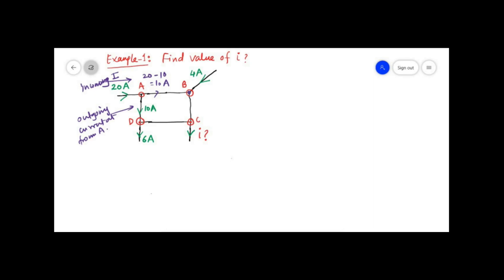At node B, 10 ampere is incoming and 4 ampere is also incoming current. We assume incoming current as positive. So at node B: 10 ampere plus 4 ampere incoming equals outgoing current. The outgoing current through branch BC will be 10 plus 4 equals 14 ampere. BC current is 14 ampere.